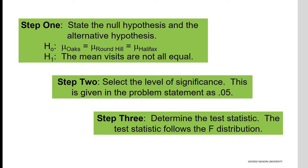The first step in testing the claim of whether there is a significant difference in the average number of patient visits among the three locations is setting up the null and alternative hypotheses. The null hypothesis indicates that there is no significant difference in the average number of patient visits among the three locations, while the alternative hypothesis indicates that the mean visits are not equal, or that there are significant differences across the three locations.